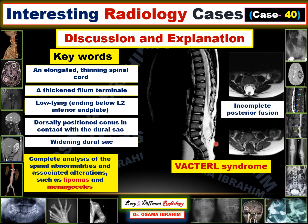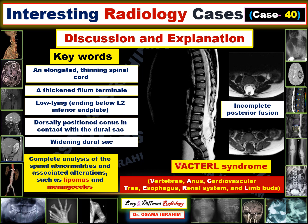You should also screen this boy to exclude VACTERL syndrome, where every letter represents a system. V represents vertebra — you should exclude fusion vertebra, dysraphism, and vertebral abnormalities such as butterfly vertebra. A represents anus, as in anal atresia or anal congenital abnormalities. C represents the cardiovascular system, such as dextrocardia, which is the most common finding in VACTERL syndrome — you should request a chest X-ray to exclude dextrocardia.